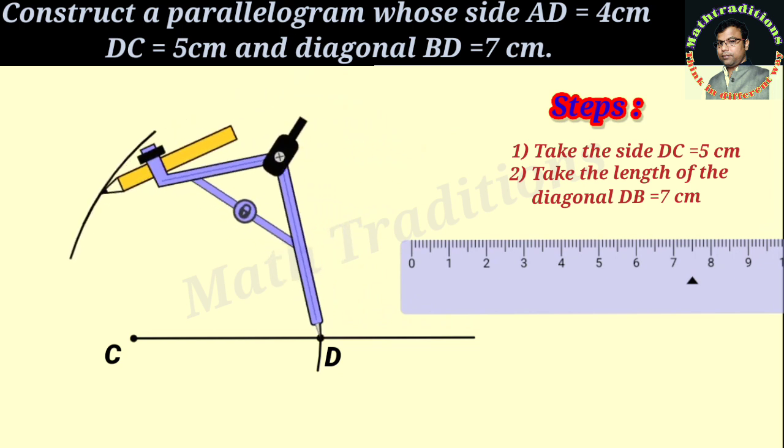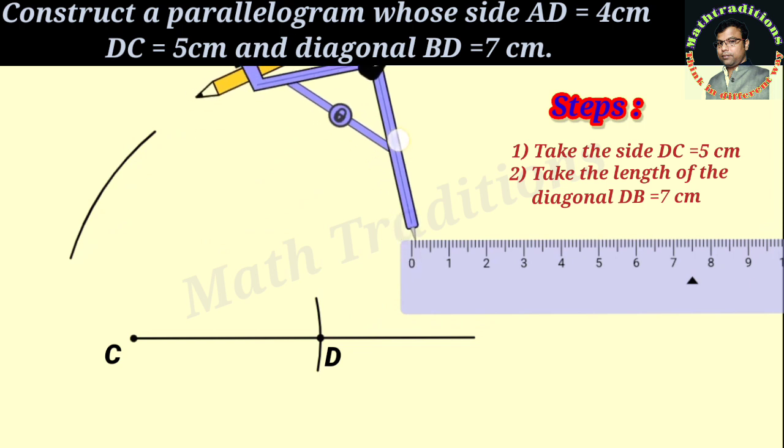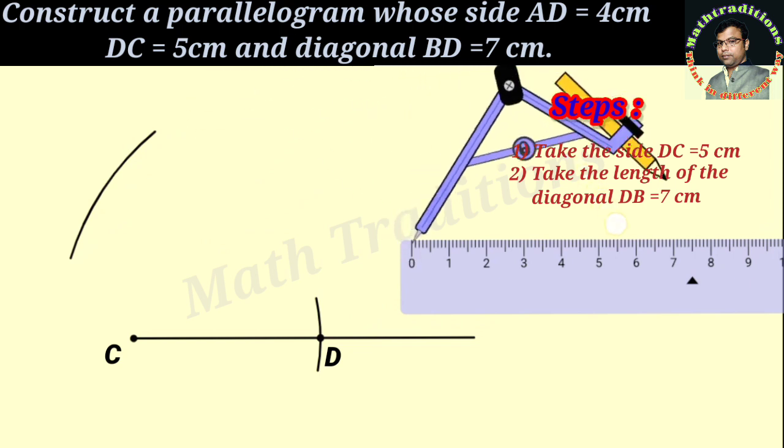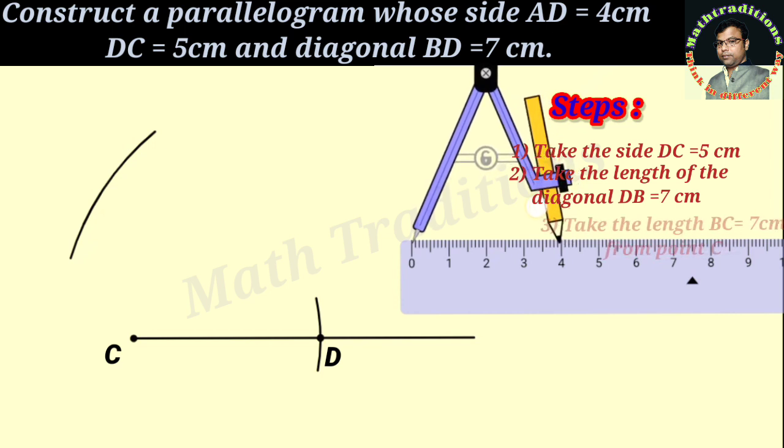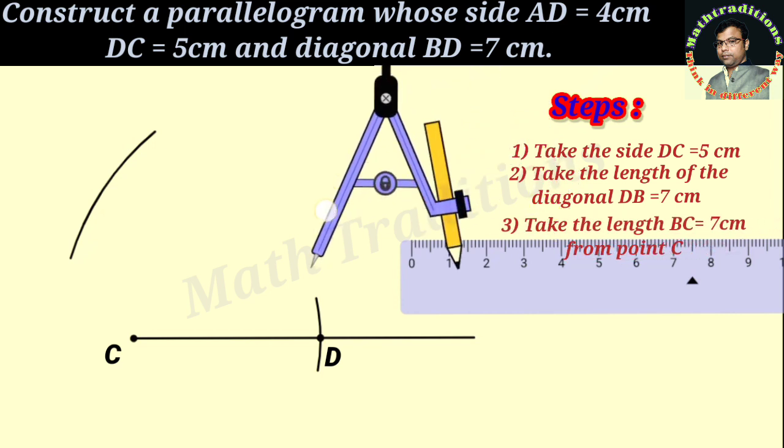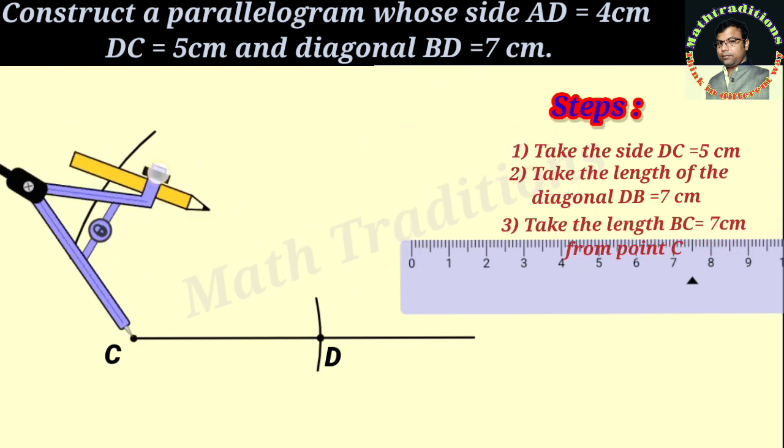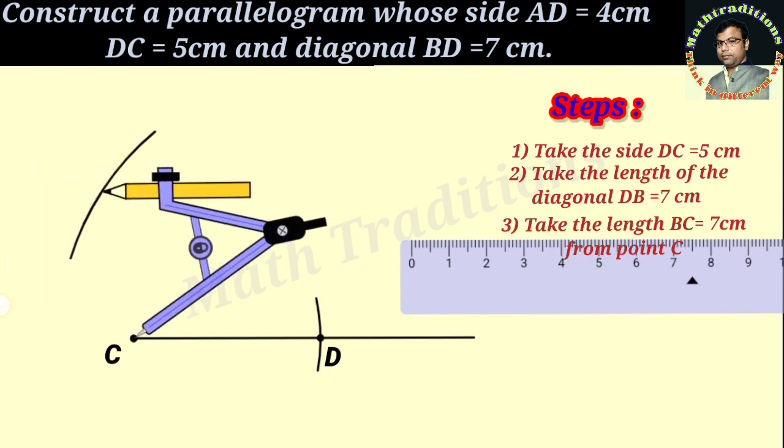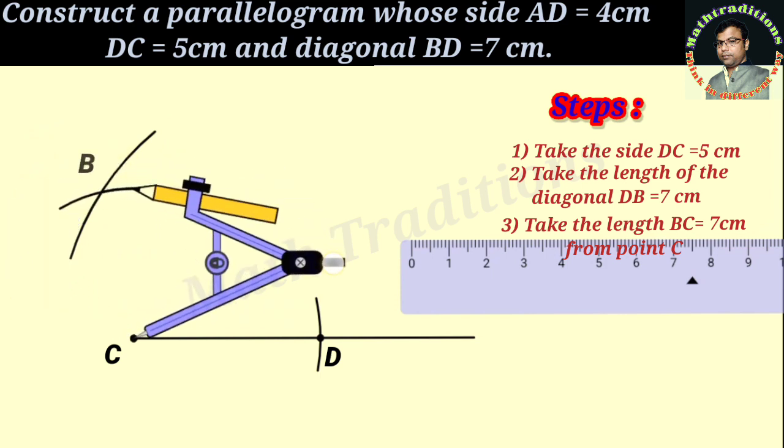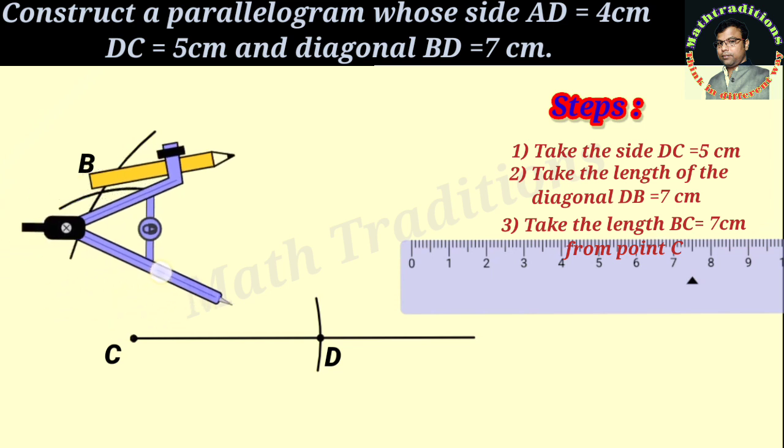Third, we will take the length AD equal to 4 cm from C to get our side BC.